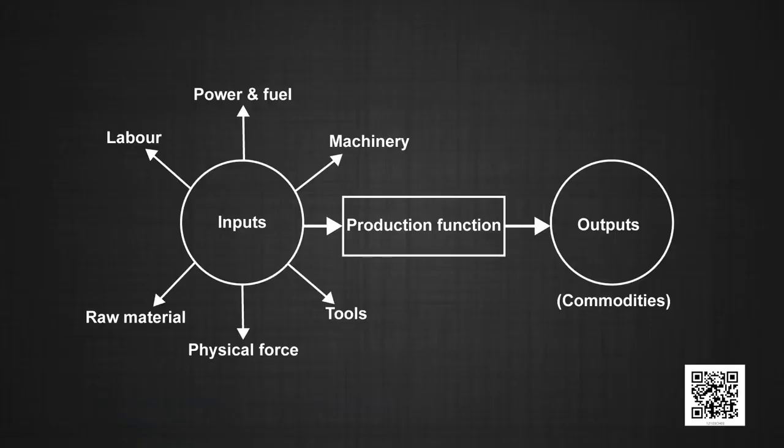Third, the relationship between output produced and inputs used in the production process depends on the economic time period under study. The variability of inputs used depends on time. Some inputs cannot be changed in the short run — that is, some inputs are fixed — and hence output can only be changed by changing the units of variable inputs. Changes in the total output by changing all inputs are possible only in the long run, whereas changes in the total output by varying the amount of a single input may be possible even in the short run.